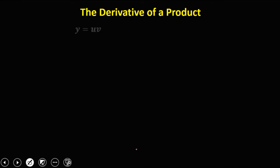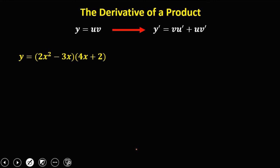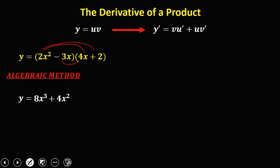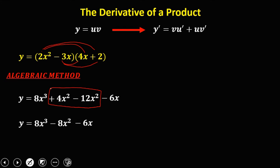For the derivative of a product, y equals u times v, the formula is: y prime equals v times u prime plus u times v prime. Given y equals (2x squared minus 3x)(4x plus 2), there are two methods. First, the algebraic method: simplify before finding the derivative. Using the distributive property: 8x cubed plus 4x squared minus 12x squared minus 6x. Combining like terms: 8x cubed minus 8x squared minus 6x.